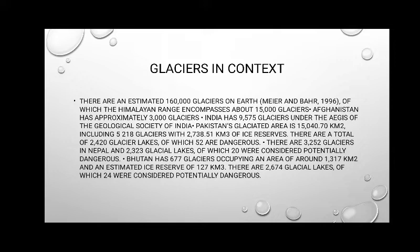There are 3,252 glaciers in Nepal and 2,323 glacier lakes, of which 20 were discovered to be potentially dangerous.